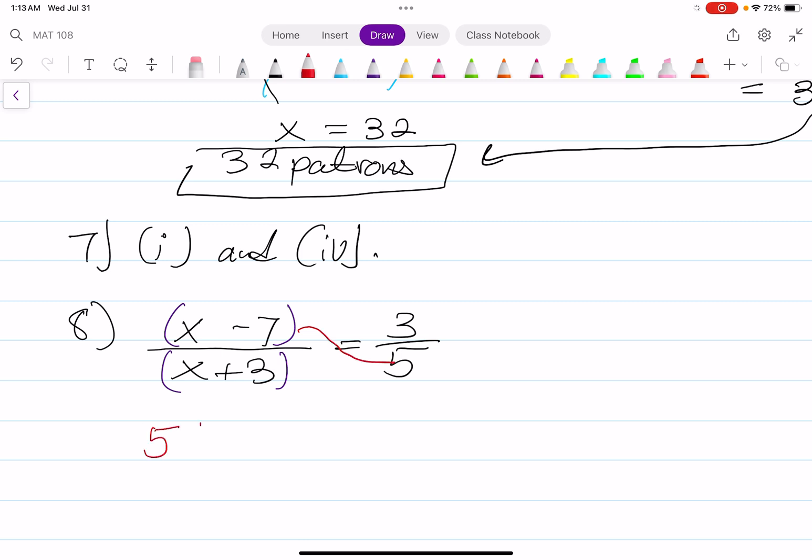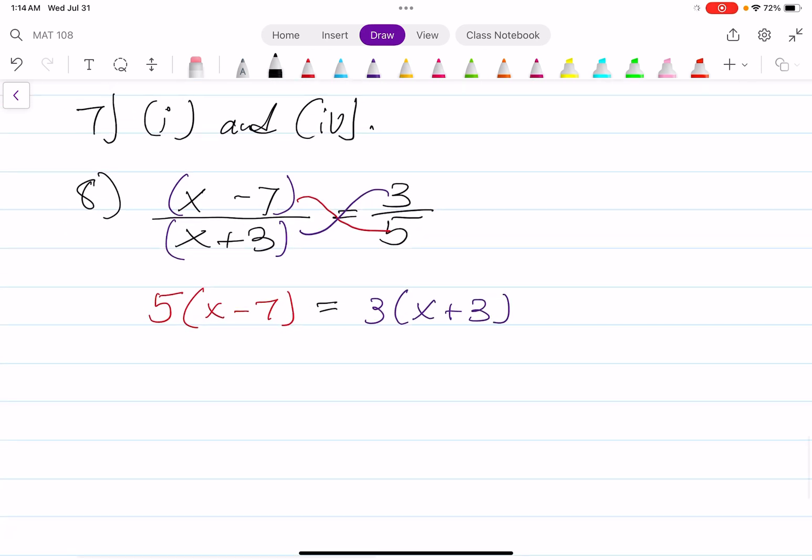We're going to cross multiply. That's 5 times the quantity of X minus 7, and that equals 3 times the quantity of X plus 3. Let's do some distributive property. 5 times X is 5X, 5 times negative 7 is negative 35. 3 times X is 3X, 3 times positive 3 is positive 9. We want to solve for X. I like to keep my variable on the left side, so I'm going to subtract both sides by 3X. I'm going to combine two steps. I'm going to move all my constants to the right side, so I'm going to add 35 to both sides.